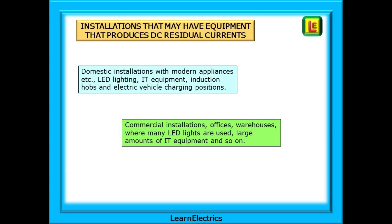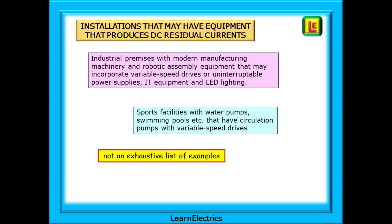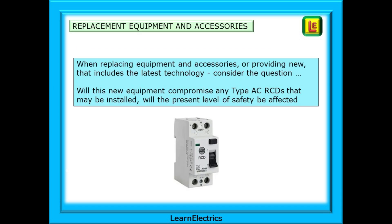Domestic installations may have LED lighting, IT equipment, induction hobs, and electric vehicle charging positions. Commercial installations such as offices and warehouses may have rows of LED lights and large amounts of IT equipment. Industrial premises may have modern manufacturing machinery and robotic assembly equipment incorporating variable speed drives, uninterruptible power supplies, IT equipment, and LED lighting. Sports facilities may also have water pumps with variable speed drives. We must be conscious of new equipment and onboard electronics when replacing accessories or providing new circuits with the latest technology.